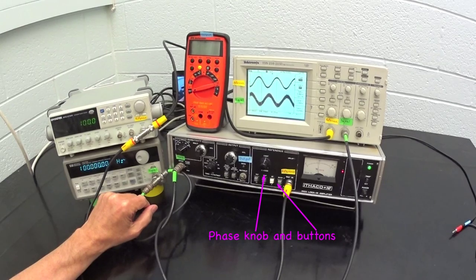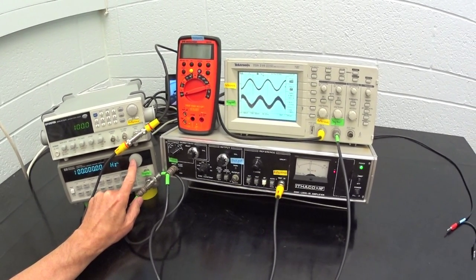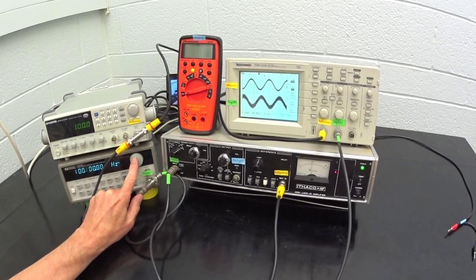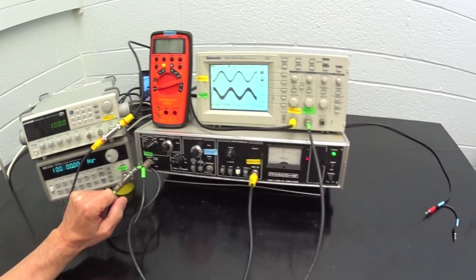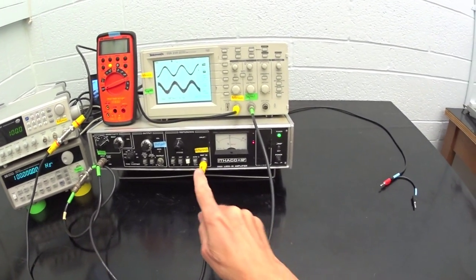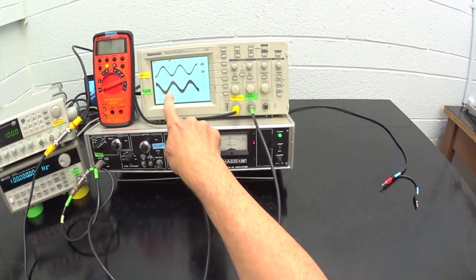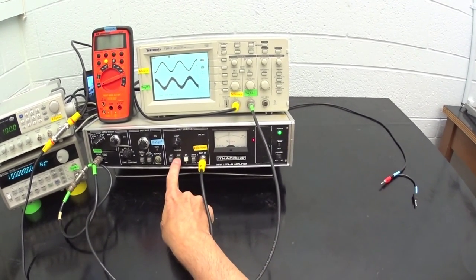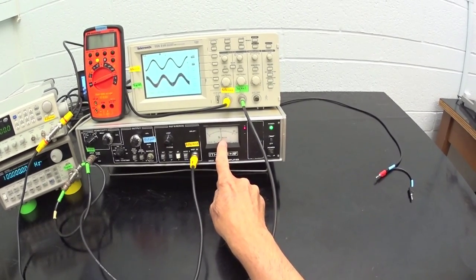We can adjust the relative phase of the signal and reference using these knobs and buttons. We normally adjust the phase until the output is a maximum, and if we want to know what the relative phase is, we can read it from the phase knob and button positions. From the oscilloscope, we can see that the reference and signal are currently about 180 degrees out of phase, and as we expect, the lock-in gauge shows a maximum and the negative phase light is on. If we press the 180 degree button, the needle is still at a maximum, but the positive phase light has now come off.